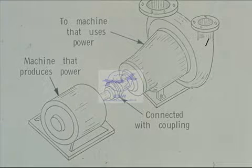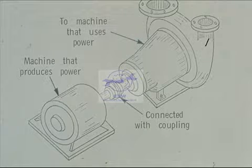We have a machine that produces power, and another machine that uses power to perform useful work. The two are connected with a coupling. Let's look at some examples of couplings in common use.